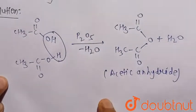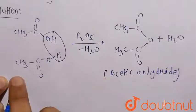So this is the required method of the preparation of acetic anhydride from the acetic acid, that is CH3-COOH.